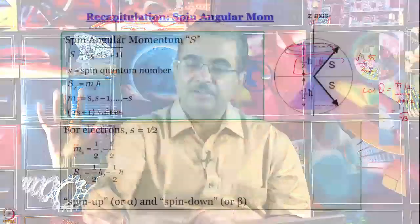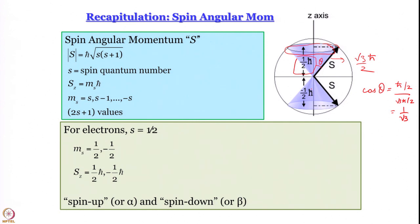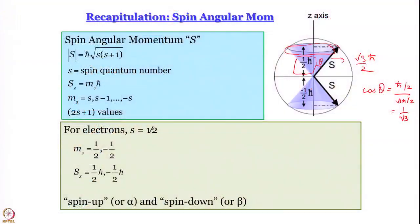Spin is associated with some kind of angular momentum; we know the magnitude and direction, and φ is completely undefined — the tip of the arrow could be anywhere. For electrons, m_s takes values of +½ and −½, so the z-component is +ℏ/2 or −ℏ/2, determining whether the spin angular momentum points up or down. Spin-up state is assigned wave function α, and spin-down is assigned wave function β. For now, it suffices to know that the wave function for up spin is α and for down spin is β.